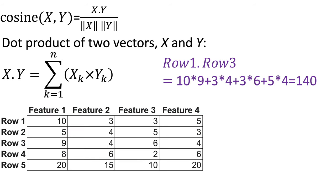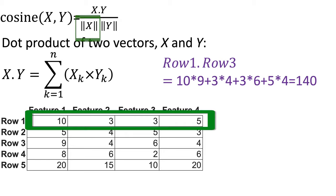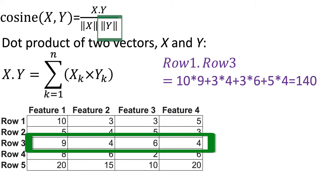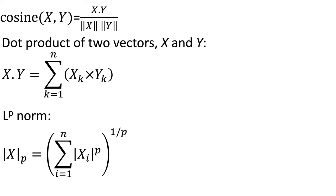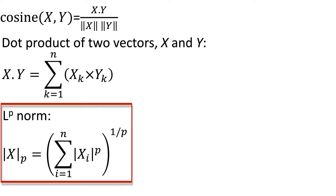If we want to compute the cosine similarity between row one and row three, we will need two more items: the norm of row one and the norm of row three. Are we familiar with norms? If not, let's discuss it. The p-norm of a given vector is computed this way.